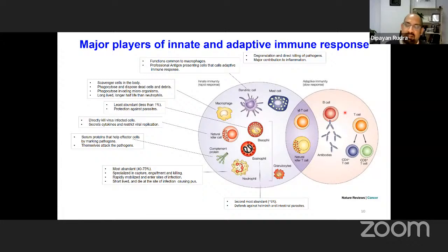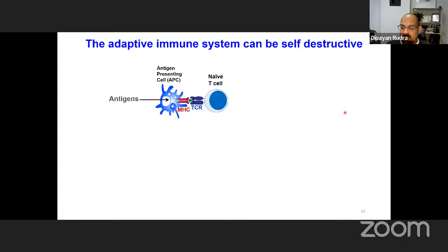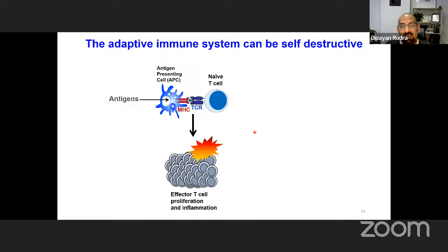Dendritic cells, or antigen-presenting cells, take up antigens and present them via the major histocompatibility complex (MHC). This MHC-peptide complex is recognized by naive T cells — either CD4 or CD8 types — triggering T-cell activation. Each clonotype recognizing that MHC-peptide can proliferate and become effector T cells. This is a very prolific process, and if not controlled properly it can cause collateral tissue damage and be detrimental to human health.